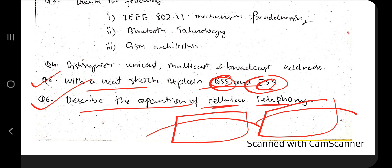Moving on to the last topic: the operation of cellular telephony — very, very important. What is cellular telephony, how does a mobile phone get connected, what are the different steps and stages it passes through, and what are the key points to mention at each stage. All of this is explained in the theory video — make sure you watch that.